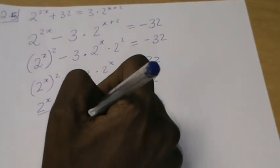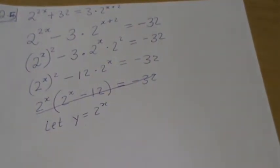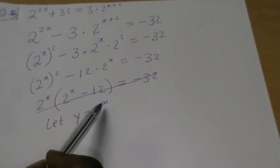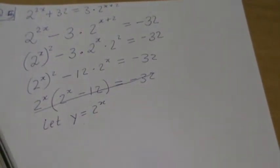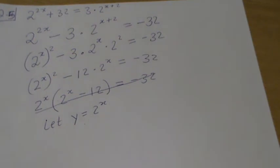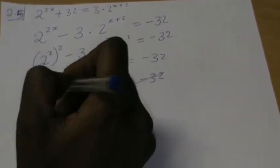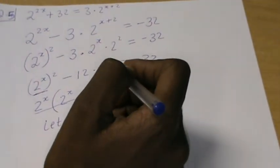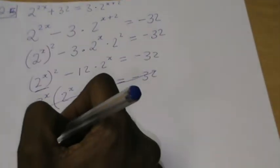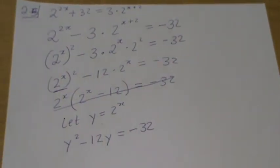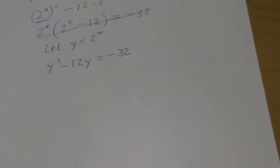We can substitute. Let y equal 2 to the power of x. Please don't say let x equal 2 to the power of x — that's confusing because x is already used in the equation. There are 25 other letters to pick from, so do not pick x. That's why I let y equal 2 to the power of x. Then everywhere I see 2 to the power of x, I substitute y.